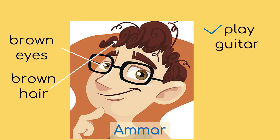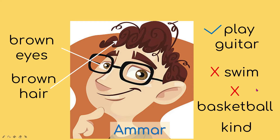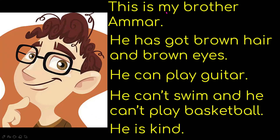For things he can't do, for example, he can't swim and he can't play basketball. As an additional point, you can talk about someone's behavior — for example, he is kind. Let's see how we put it into sentences: 'This is my brother, Amma. He has got brown hair and brown eyes. He can play guitar. He can't swim and he can't play basketball. He is kind.' That's my suggestion for the additional point.